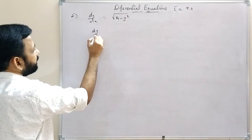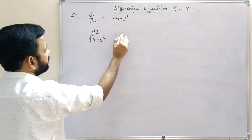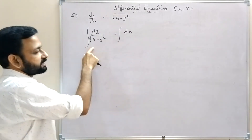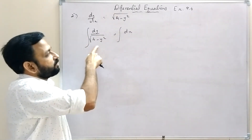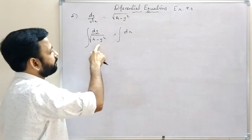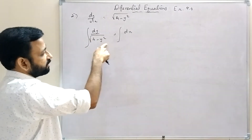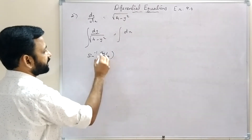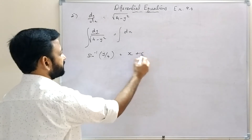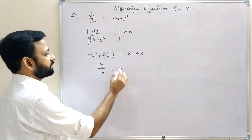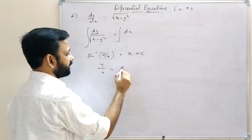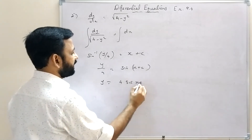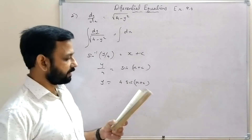Integrating: sin⁻¹(y/4) = x + c. Therefore y/4 = sin(x + c), so y = 4 sin(x + c). That is the solution of the differential equation dy/dx = √(4 - y²).